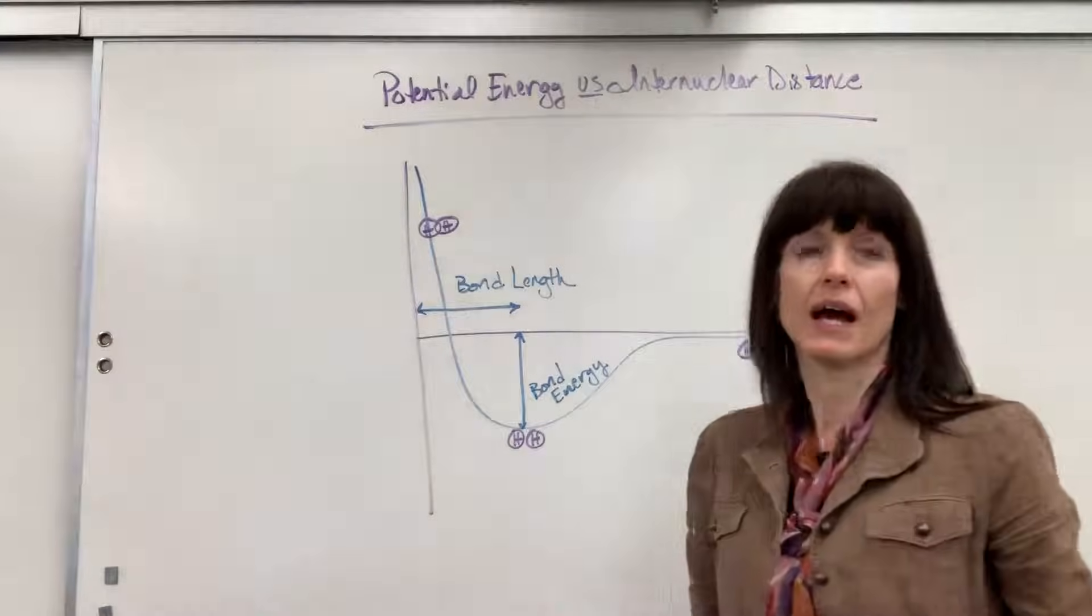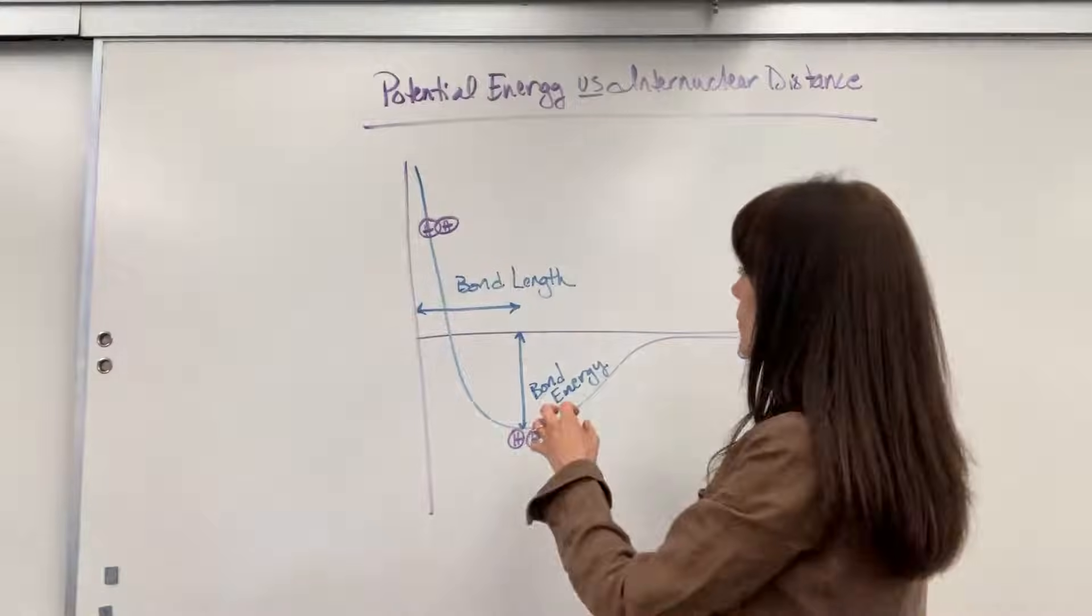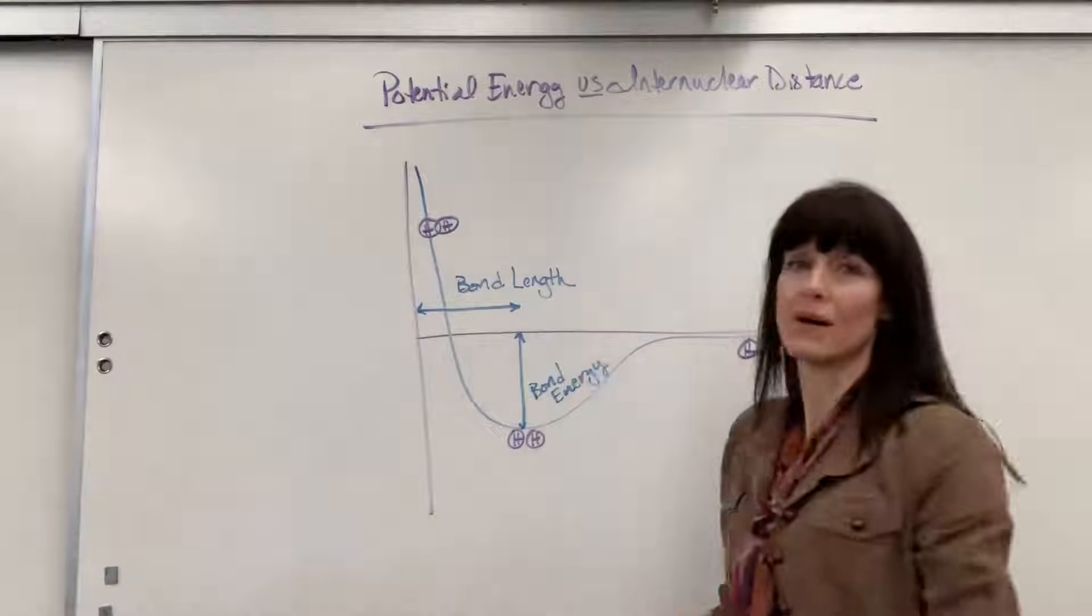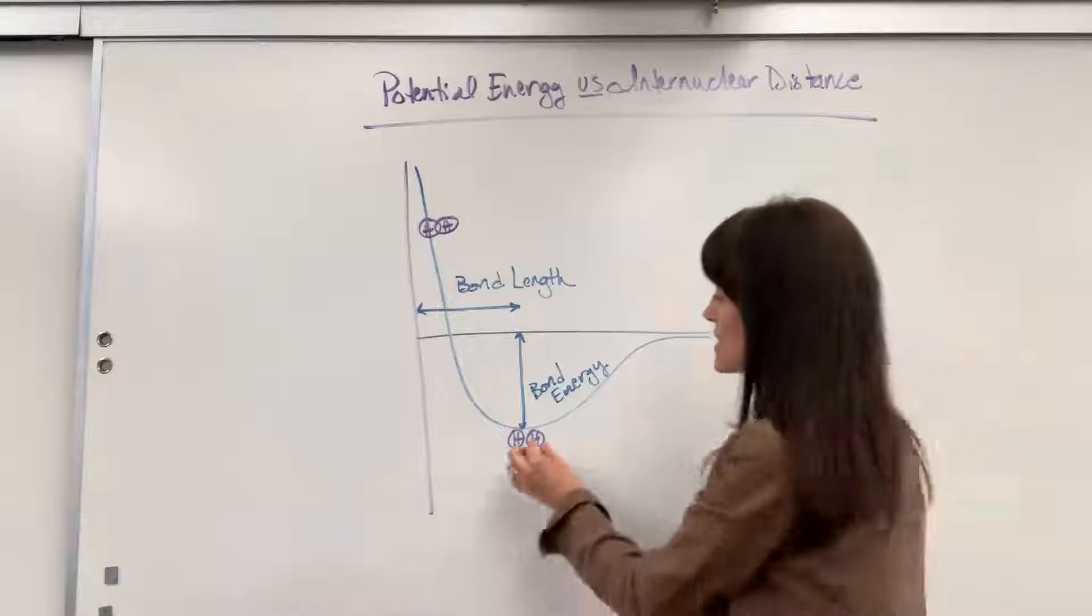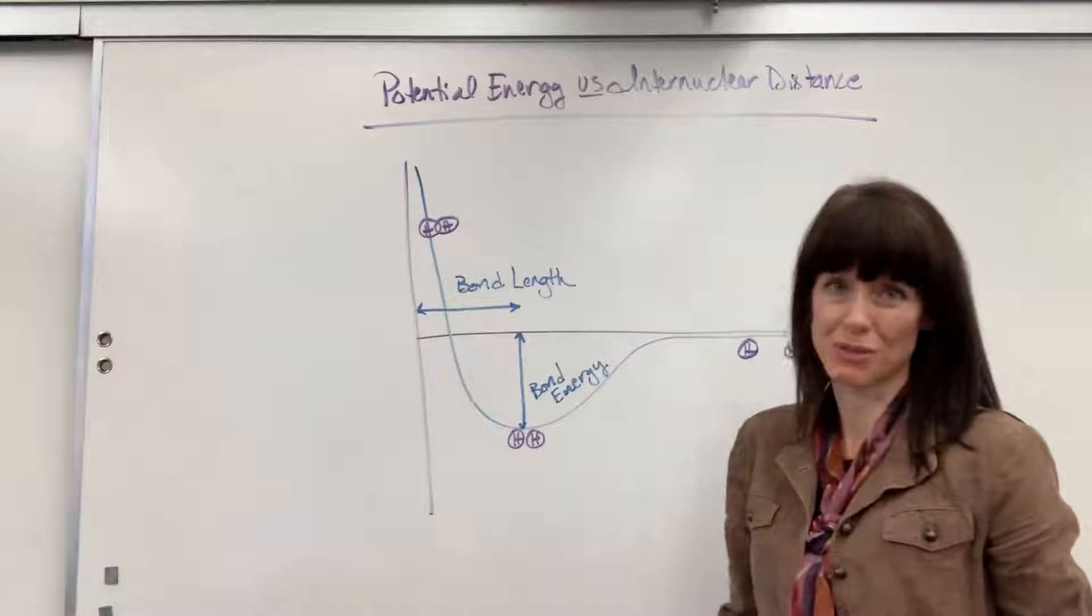From here to here, this would be measured in, let's say, picometers. From here to here, that's the bond length. That's the distance between those two hydrogens.